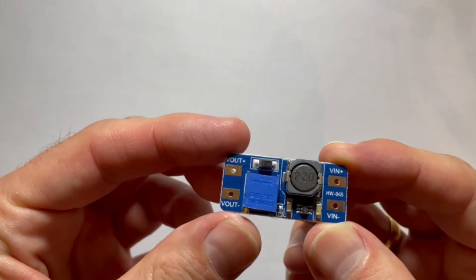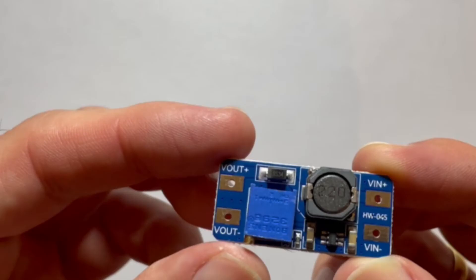So let's zoom in on that thing. On the right you see voltage in minus and voltage in plus, that's where we put our DC voltage. And at the left you see the Vout plus and Vout minus, and that's where our higher voltage comes out. That's when we have stepped up the voltage.